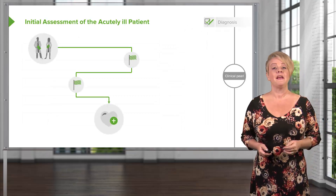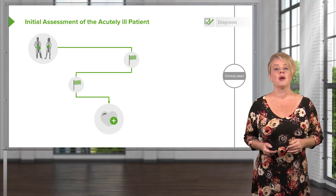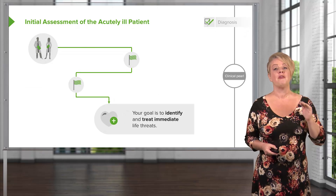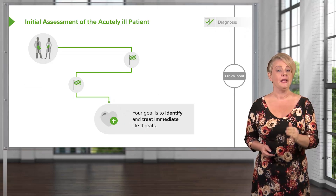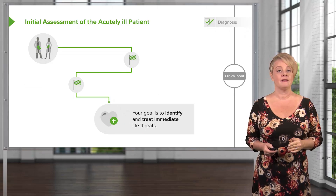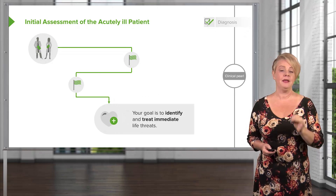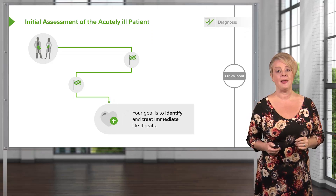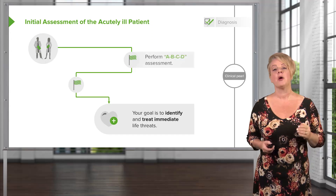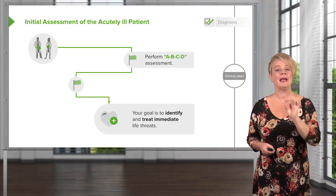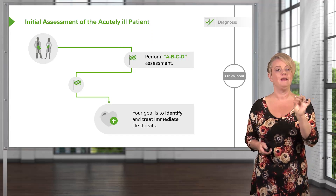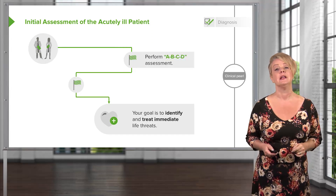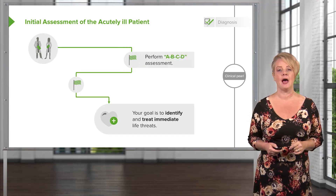When we assess the acutely ill patient, we're going to start off with the goal of identifying and treating immediate life threats. That's going to be the mantra we repeat to ourselves while we're taking care of this patient. And we're going to accomplish that by performing an A, B, C, D assessment on each and every patient, each and every time.